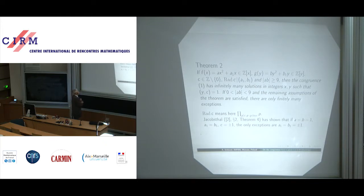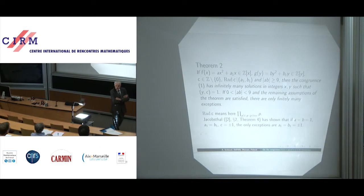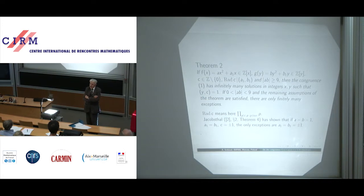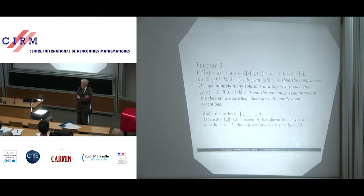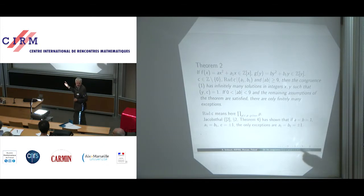Radical C means here the product of all primes dividing C, which was yesterday denoted K(N) by Professor Stewart. However, since K(N) is used by Hasse in his book for a different meaning — namely the square-free kernel of N, where K is the first letter of 'kernel' — I prefer to use the notation radical C.